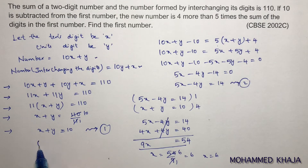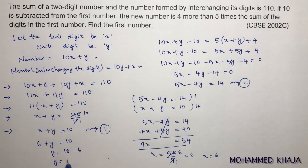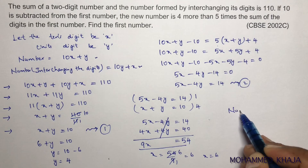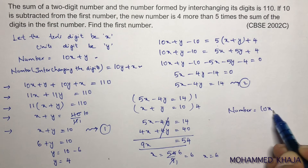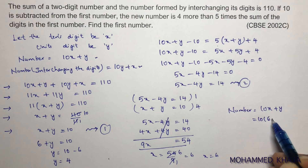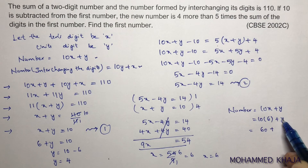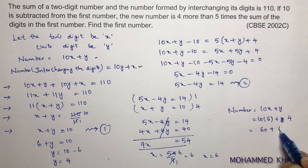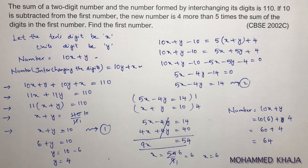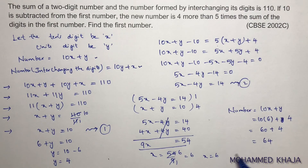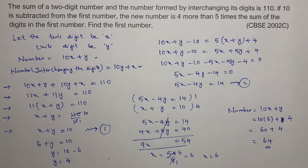Substituting x = 6 into equation 1: 6 + y = 10, so y = 4. Therefore the two-digit number is 10x + y = 10(6) + 4 = 60 + 4 = 64.